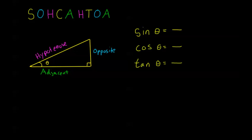Now I'm going to fill in some gaps here. SOH — the first three letters of SOHCAHTOA — means sine is equal to opposite over hypotenuse. CAH means cosine is adjacent over hypotenuse. And TOA means tangent is opposite over adjacent. So I've defined sine, cosine, and tangent of an angle to be the ratio of two sides of a triangle formed by that angle and a right angle.